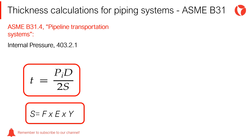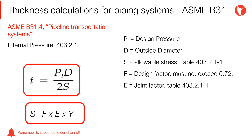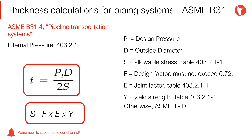In accordance with the ASME B31.4 code, the thickness required for straight sections of pipes under internal pressure is given by the following equation, where the required thickness T is equal to: P, design pressure; D, outside diameter; S, allowable stress; F, design factor, which must not exceed 0.72; E, joint factor; and Y, yield strength. The design factor F reduces the allowable stress of the material due to imperfections in the pipeline, service conditions of the system, and location of the pipeline.